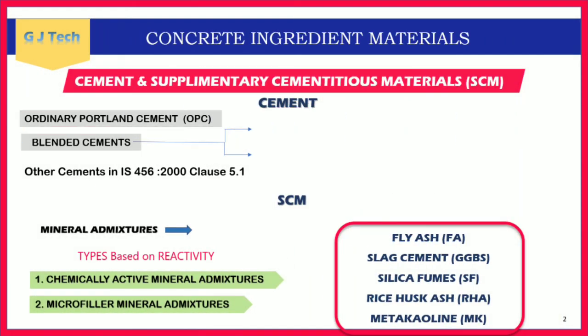Cement and cementitious materials: cement is the primary ingredient of concrete. Different kinds of cements can be classified as ordinary portland cement and blended cements — in modern terms called hydraulic cements. Cement is a material which sets and hardens to a hard rock-like state when it reacts with water.